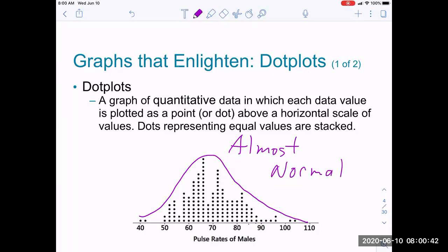A normal curve, being what you may have heard as a bell curve, is very symmetric. This one, if you look at it, you would say it's a little bit skewed to the right, meaning there's some higher data values, pulse rates of males.